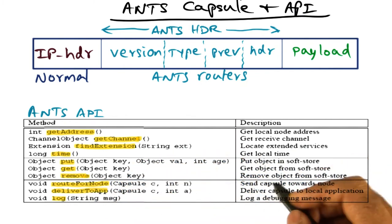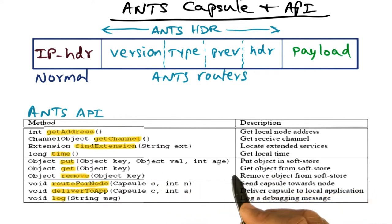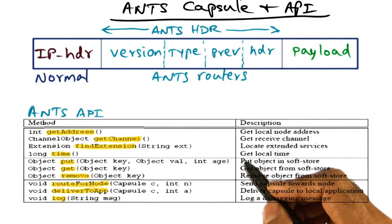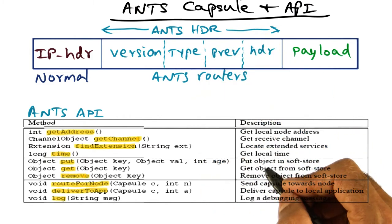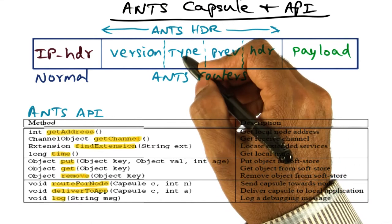And the soft store is a place where we can store the code that corresponds to a particular capsule type. So the primitives that are available for manipulating the soft store are things like put object and get object. The soft store is basically a key value store, and in this key value store, you can store whatever is important for personalizing the network flow for capsules of this type. An obvious candidate for storing in the soft store is the code that is associated with this type.